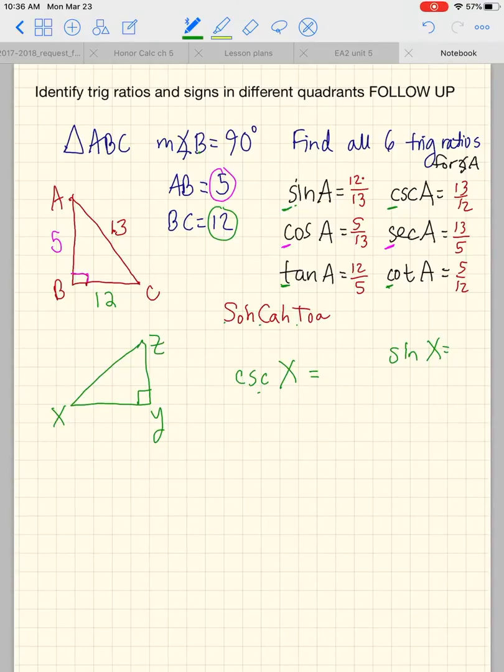Now sine by SOHCAHTOA, you can memorize it that way, is opposite over hypotenuse. So let's say the opposite was radical 3 and the hypotenuse was a 2. For angle x, you see specifically, this is the opposite side. And of course, the hypotenuse is always opposite to the 90 degree angle, which would leave this xy to be the adjacent.